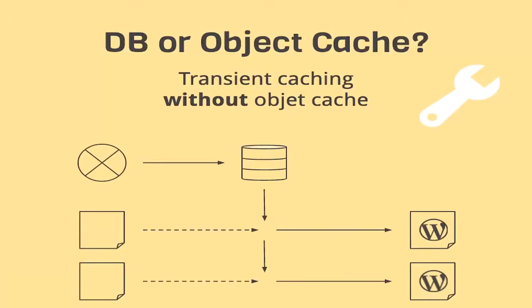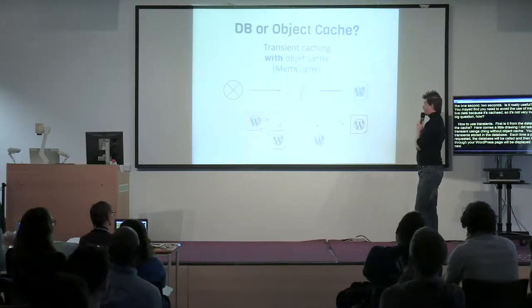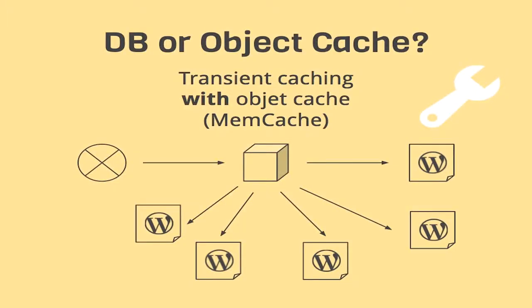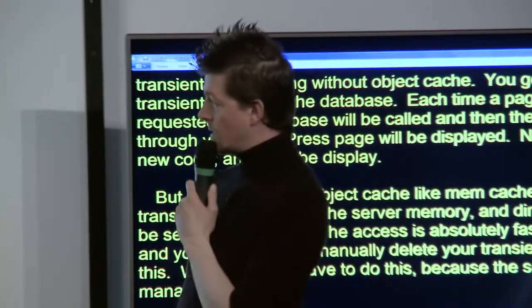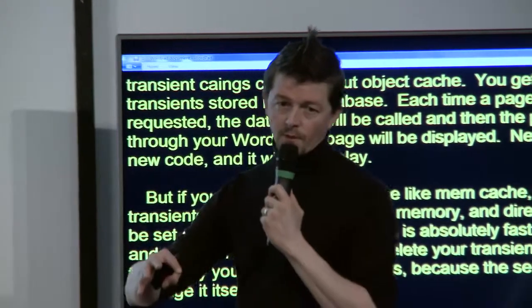First, is it from the database or object cache? Here's a little diagram about transient caching without object cache. Like 90% of you and me, you get your transients stored in the database. Each time a page is requested, the database will be called and then your WordPress page will be displayed. But if you are using object cache like memcache, your transients are stored in the server memory and the access is absolutely faster, and you won't have to manually delete your transients.